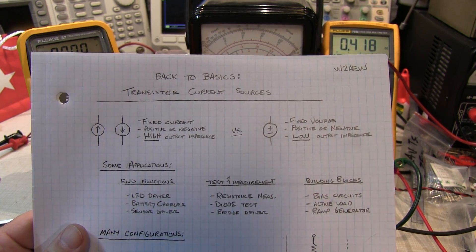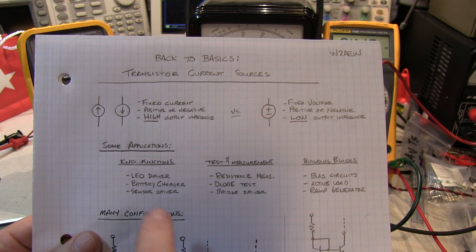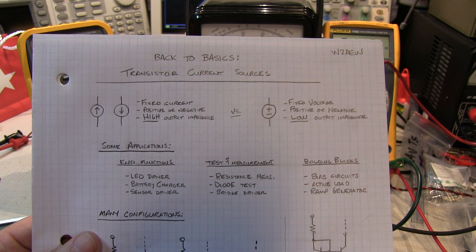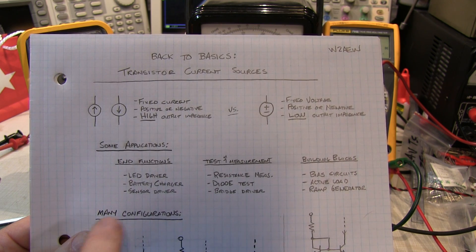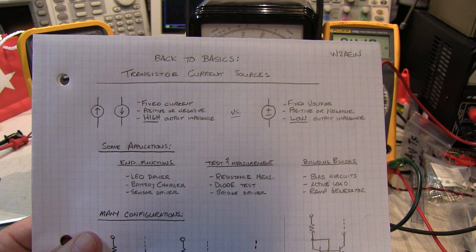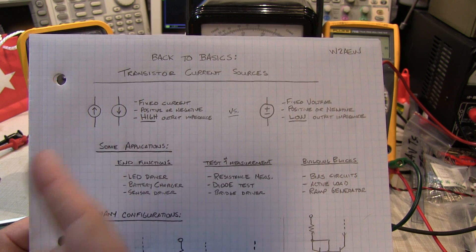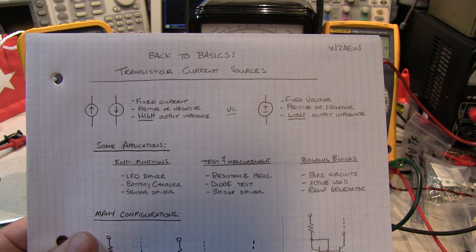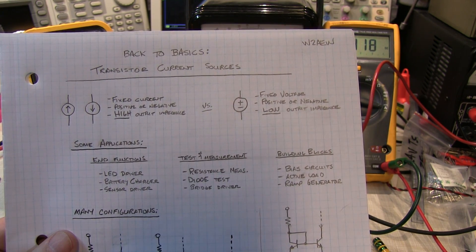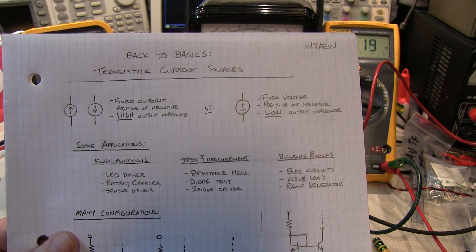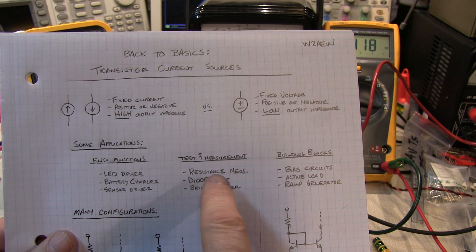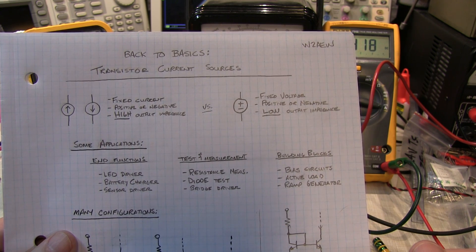There are many applications for current sources. You can use them to drive LEDs — if you set up a fixed current, you could put one or more LEDs in series and the current won't change. You can use them to charge batteries, since many battery chemistries require a constant current charge. You can use them to drive sensors. There are also many applications in test and measurement: putting a fixed current across an unknown resistor lets you measure voltage and calculate resistance. A diode test built into many DMMs typically puts a fixed current through a diode to measure the diode voltage.